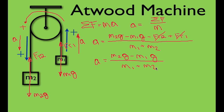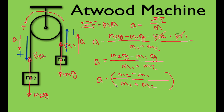That's the equation for the acceleration of an Atwood machine — just the two masses and the acceleration due to gravity. You often see it written in a factored form: acceleration equals (M2 minus M1) divided by (M1 plus M2), multiplied by g. Both forms are the same equation; factoring g out of the numerator just makes it look a little cleaner.